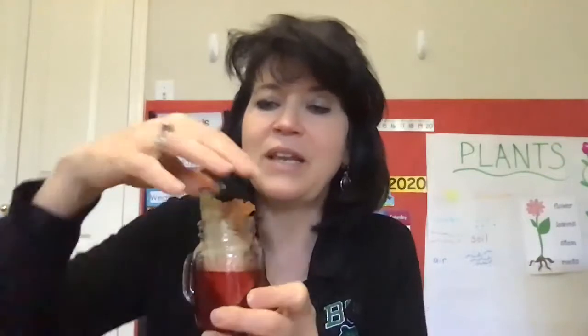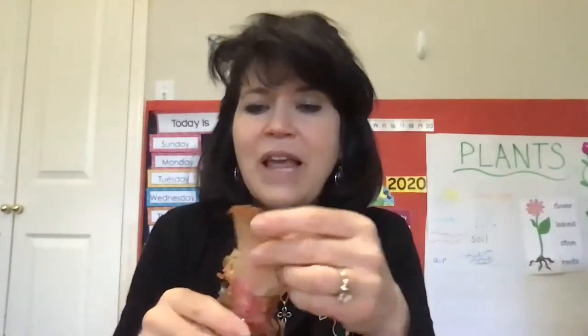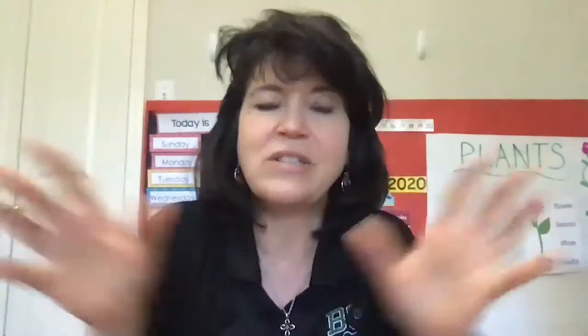I wanted to show you the plant that we looked at the other day. I told you how I was going to put it in colored water to show you how the stem works. Look what happened — my whole lettuce turned red because I put it in red food coloring. It went up through the roots, up the stem, and spread the red to the rest of the plant. That's how the stem works. It drinks up the water, and you can see how it drank up the color and sent it to the rest of the leaf.